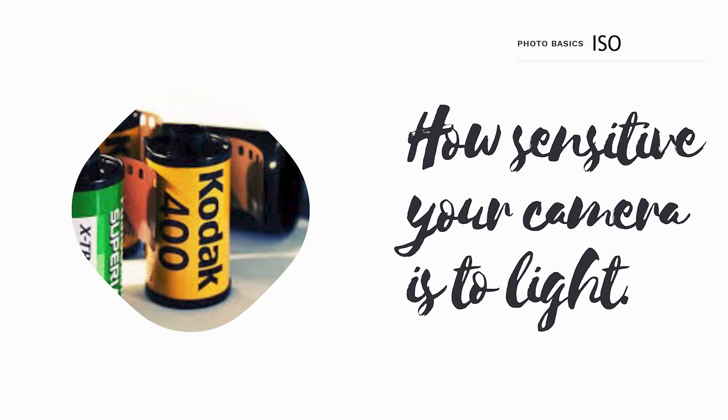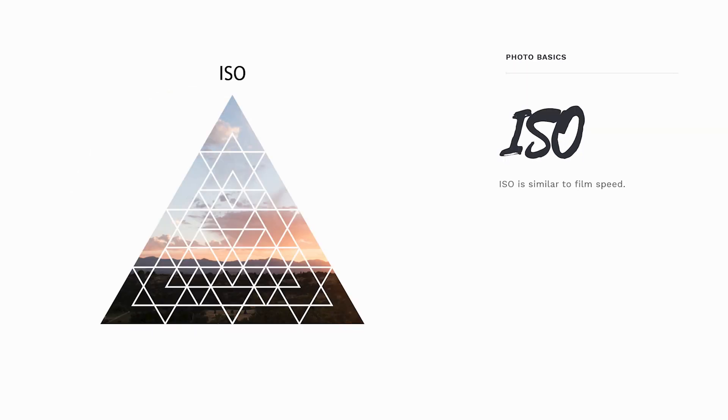The first one I'm going to teach you and talk about is called ISO. I'll be telling you these three things in the order of the way that I change them in my camera when I first start a session. So ISO — in my mind, I think of the word sensitivity. I take that S out and remember it as sensitivity.